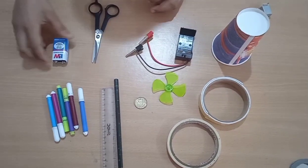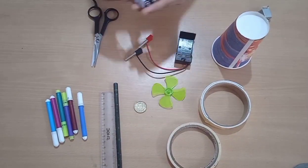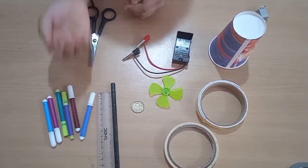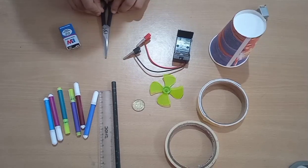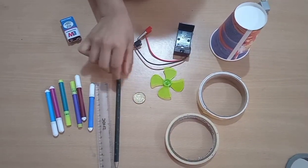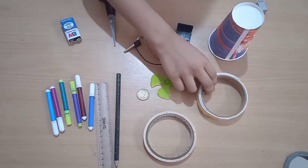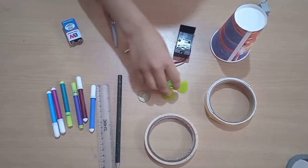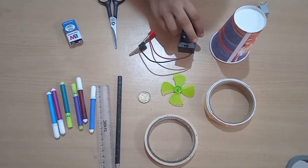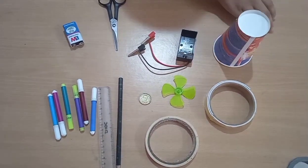For making this robot, we need 9V battery, some sketch pens, a scissor, scale, pencil, a coin, masking tape, double sided tape, a fan, battery holder, paper cup and motor.